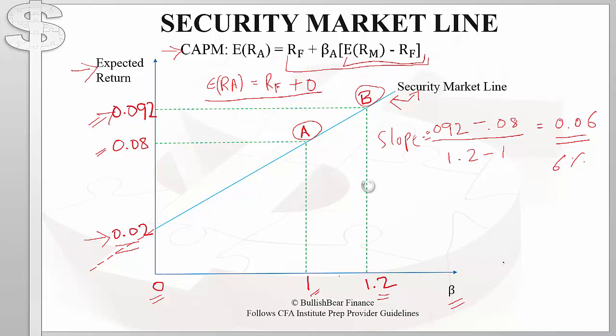Some assets might not plot on the security market line. For example, point C represents an asset with a risk level of 1.2 (measured by beta), but its expected return is considerably less than 9.2% — the return at point B for that same beta. Asset C is overvalued and its price must go down so that its expected return can increase to 9.2%. In general, any point that plots below the security market line is overvalued.